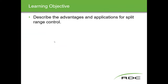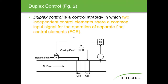The learning objective is to describe the advantages and applications for split range control. Starting out, we look at duplex control, which is the strategy in which two independent control elements share a common input signal for the operation of the final control element. You can see here we have two independent control elements with a common input signal that drives both of them.